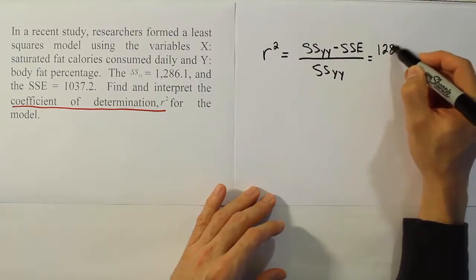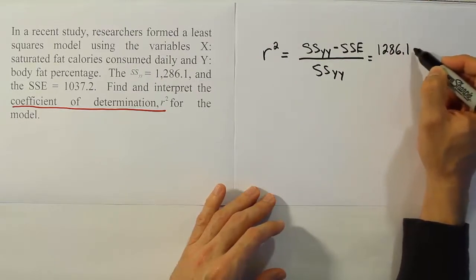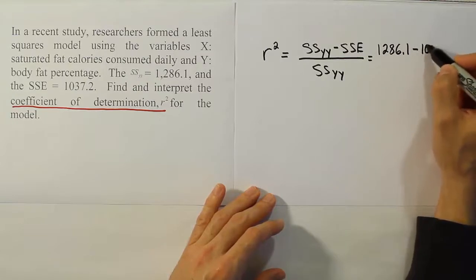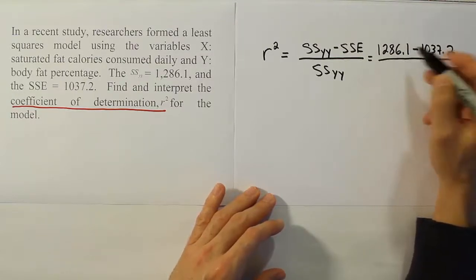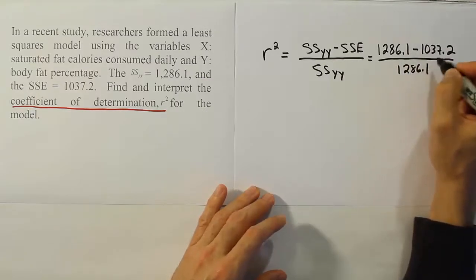So, 1,286.1 minus the sum of squares for error, which they listed as 1,037.2, divided by 1,286.1.